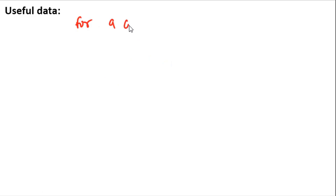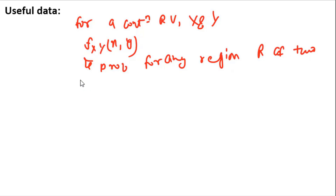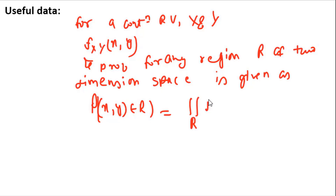The useful background for this question: for continuous random variables x and y, the joint probability density function is denoted as f(x,y). The probability for any region R of two-dimensional space is given by the double integral of f(x,y) over region R, i.e., ∬_R f(x,y) dy dx.